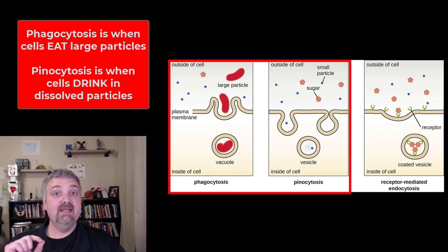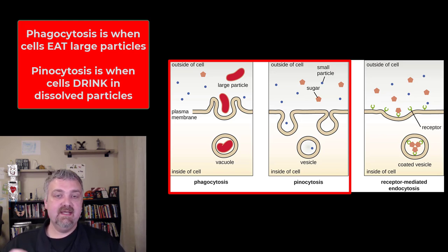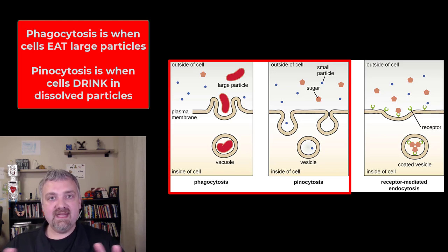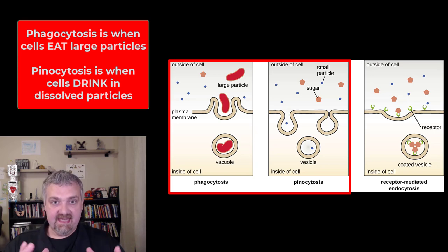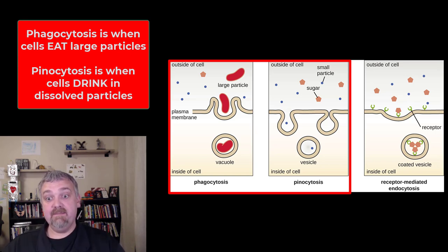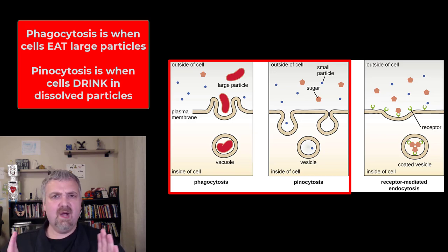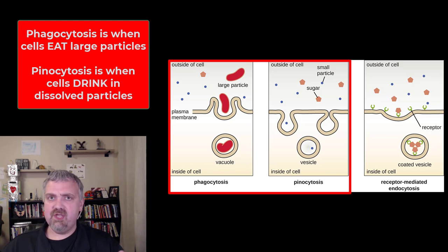Peno means to drink, so pinocytosis is cell drinking. The difference here is your cells are going to take in material that's already been dissolved and broken down — it's going to bring in dissolved substances and drink it in. We'll talk about phagocytosis a whole lot more because phagocytes are a huge part of your immune system.